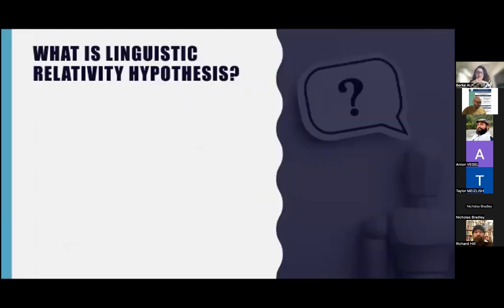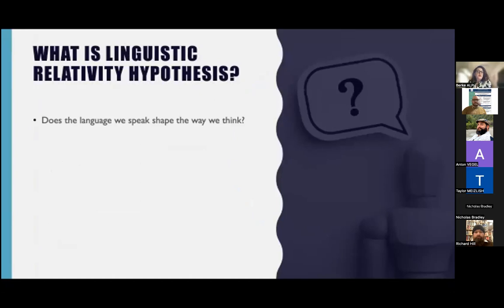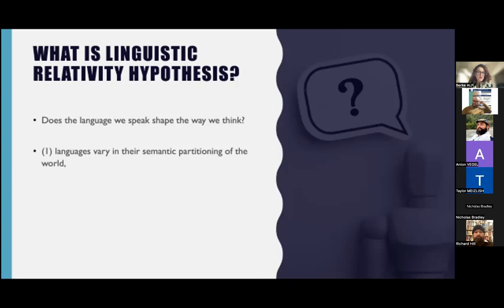So what is the linguistic relativity hypothesis? Very simply, it's the idea that the language we speak shapes the way we think. You may have seen the movie Arrival — it was mentioned there, and since then it became a bit more popular. For a more detailed definition, Gettner and Golden Meadow described it like this: languages vary in their semantic partitioning of the world; the structure of one's language influences how one perceives the world; therefore speakers of different languages will perceive the world differently.